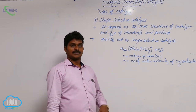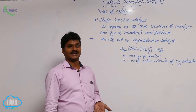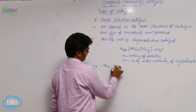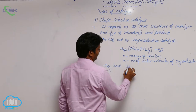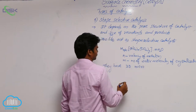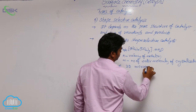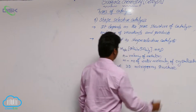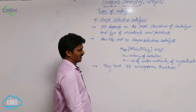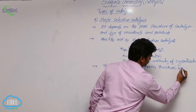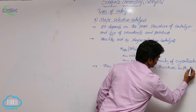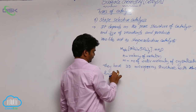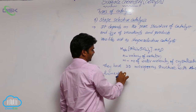Zeolites are microporous aluminosilicates with a three dimensional network. They have a three dimensional microporous structure with an aluminum-oxygen-silicon framework. Some of the silicon atoms in this three dimensional silicate network are replaced by aluminum atoms.